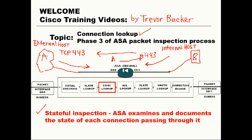When the return traffic is sent back, it's going to match that flow in the connection table and be immediately permitted through the device. There is an idle timeout period for connections, and whenever that idle timeout period is reached, the connection is aged out of the connection table.